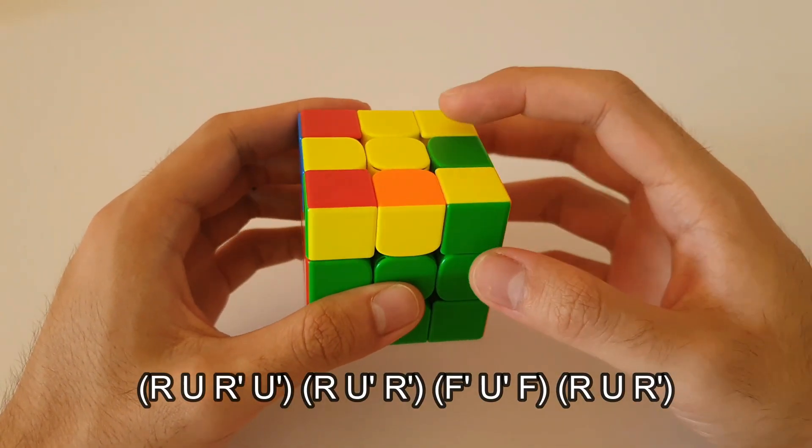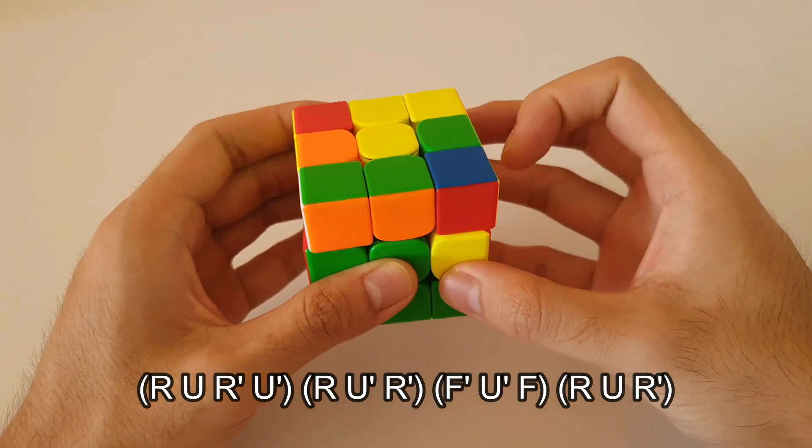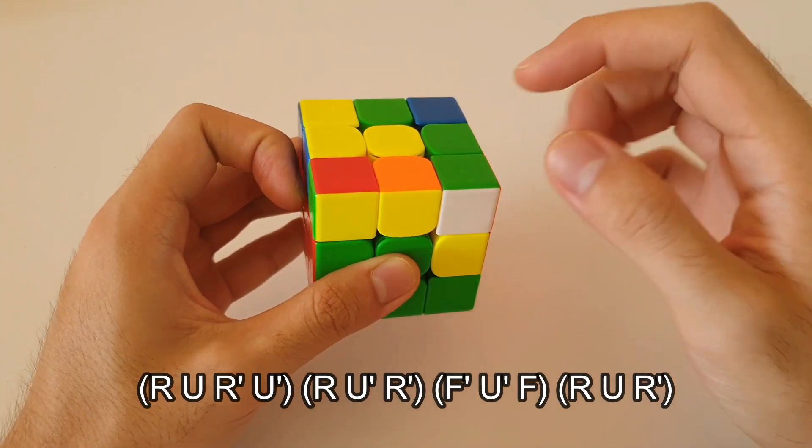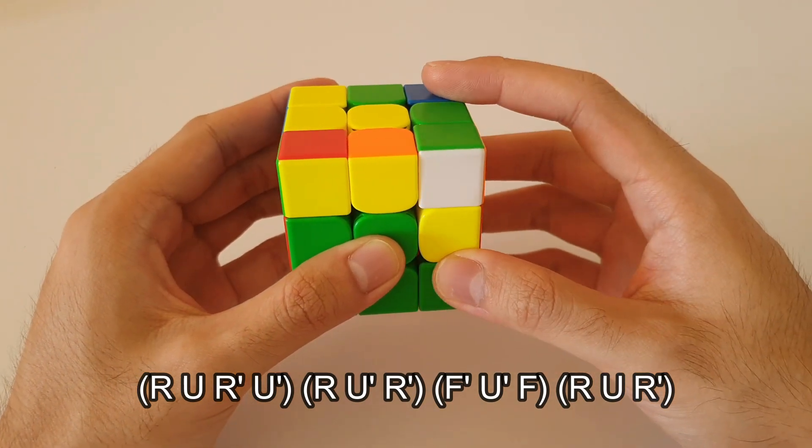So the algorithm starts off with a sexy move, which I'm sure you'll know how to do. After that, you can kind of think of inserting sort of this corner into this slot using R moves, like this.